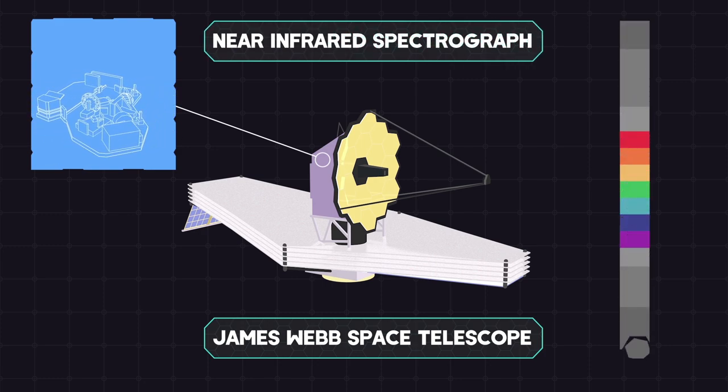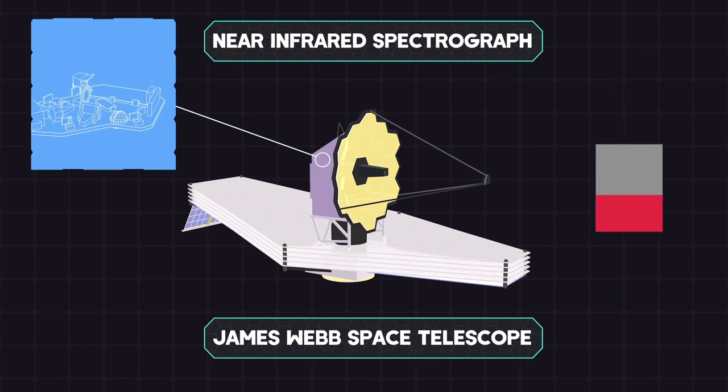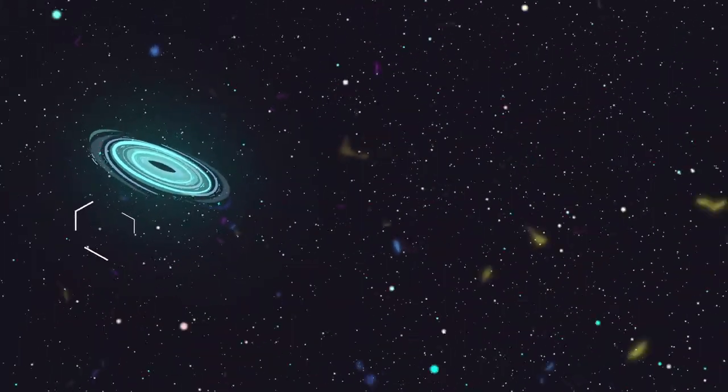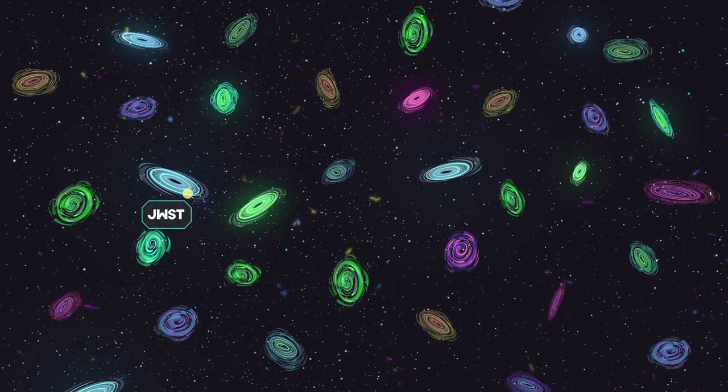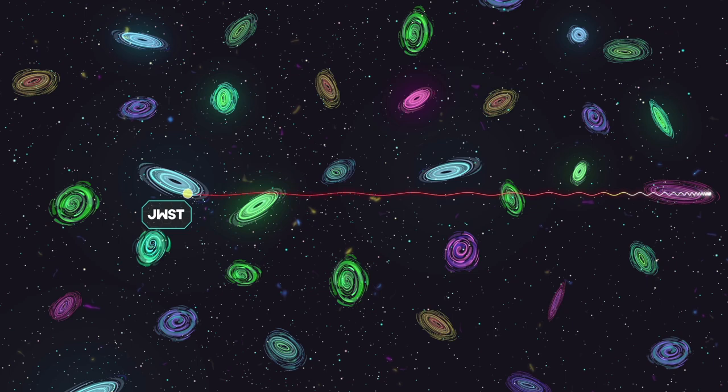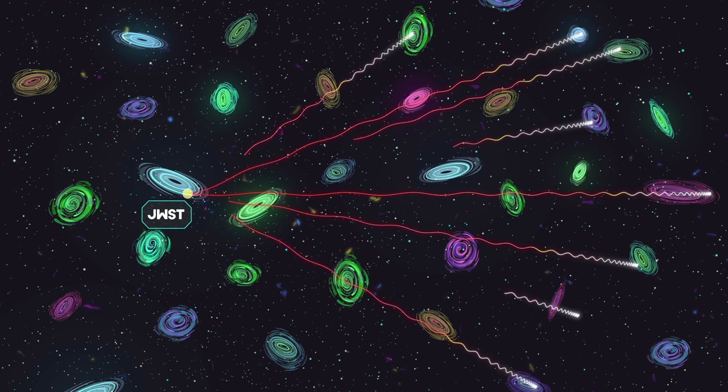Many of the objects the James Webb Space Telescope will look at are the first galaxies to form after the Big Bang. These galaxies are so faint, the Webb's giant mirror must stare at them for hundreds of hours to collect enough light to form a spectrum. The near-infrared spectrograph is very unique because it can observe 100 objects at the same time using a multi-object spectroscopy mode. It is the first spectrograph in space with such a capability.